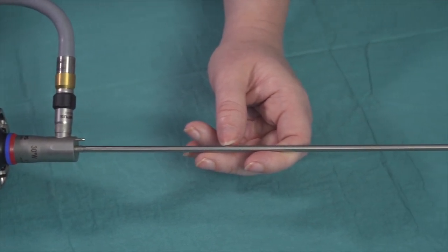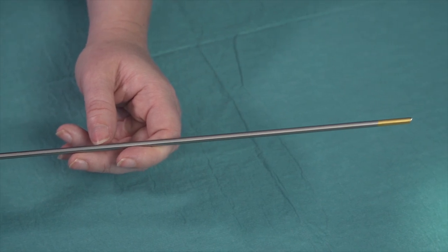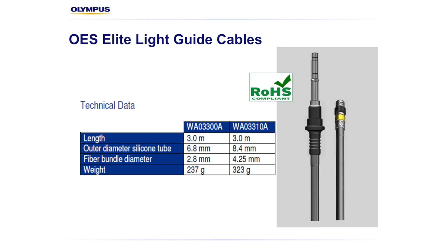Light continues to travel along the telescope illuminating the optics, and finally the light is emitted at the lens. Depending on the diameter of the telescope you are using, you may want to use a smaller or larger light guide. Olympus sells two sizes of light guide: small and medium. The smaller light guide is suited to smaller diameter telescopes such as those used in urology with a four millimetre diameter, ensuring the light post of the telescope does not overheat and cause unnecessary heat-related wear to the telescope components.